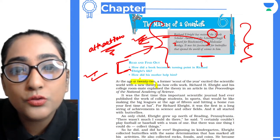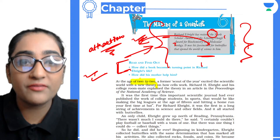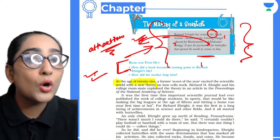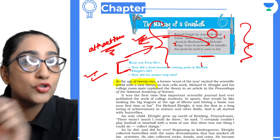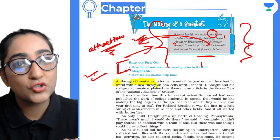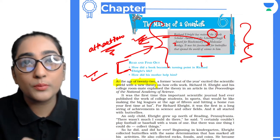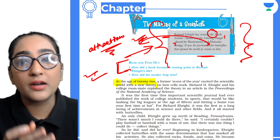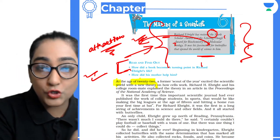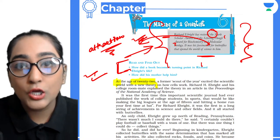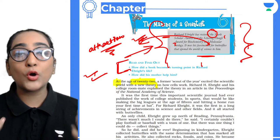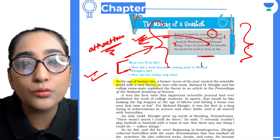At the age of 22, a former Scout of the Year excited the scientific world with a new theory. And what was that theory about? It was how cells work. Our body is made up of cells. Everybody is aware of it. He brought a new theory about how cells work.